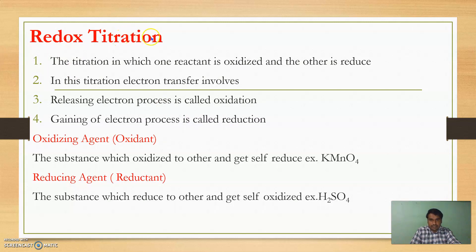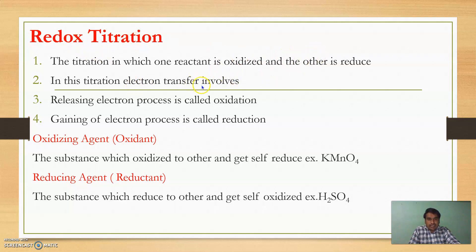The next is Redox Titration, also called Oxidation-Reduction Titration. This is the titration in which one reactant is oxidized and the other is reduced. In this titration, electrons are transferred. The releasing of electrons is called oxidation, and the gaining of electrons is called reduction. One species donates electrons (oxidation) and another species gains electrons (reduction).